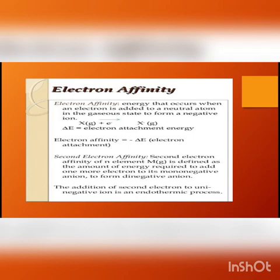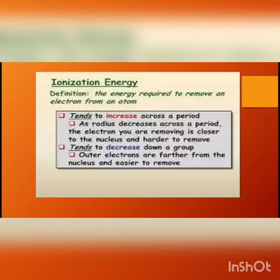Ionization energy is the energy required to remove the outermost electron from an atom. For example, removing the first electron requires the first ionization energy, and removing the second electron requires the second ionization energy. Atomic radius is the distance between the nuclei of two similar atoms — it is called atomic radii.